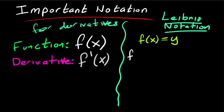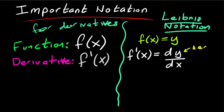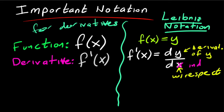Another way of writing the derivative is Leibniz notation: dy over dx. The way to read this is 'the derivative of y with respect to x,' and this tells you with respect to what quantity you're taking the derivative. Here, x is the independent variable.